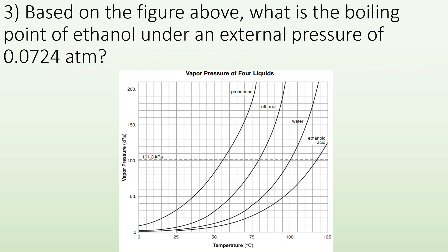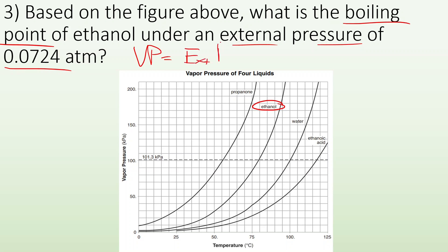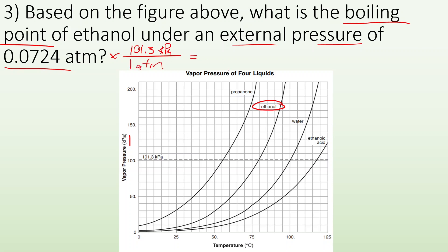Same kind of problem. Based on the figure, what is the boiling point of ethanol under an external pressure of 0.0724 atmospheres? The boiling point is when your vapor pressure equals the external pressure, so it's really asking at what temperature will ethanol have a vapor pressure of 0.0724 atmospheres. This chart is in kilopascals, so I do 0.0724 atmospheres times 101.3 kPa per 1 atmosphere, and I get roughly about 7 kilopascals.